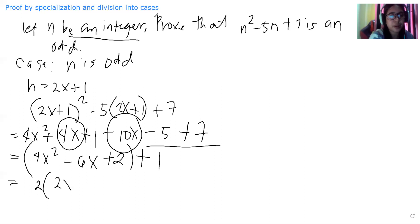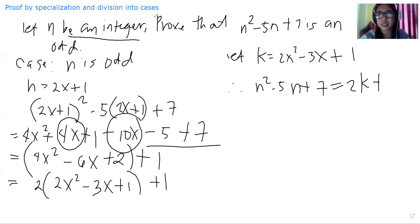Let's group 4x squared minus 6x plus 2. Factor out 2. So we have 2 times 2x squared minus 3x plus 1 plus 1. If we let k be equal to 2x squared minus 3x plus 1, therefore n squared minus 5n plus 7 is equal to 2k plus 1. And this is odd number. So hence, n squared minus 5n plus 7 is odd. This is for case number 1.